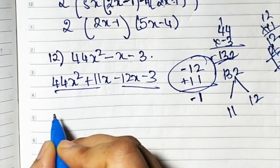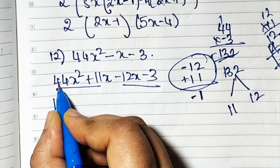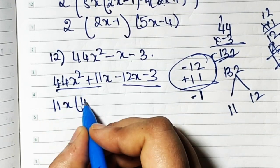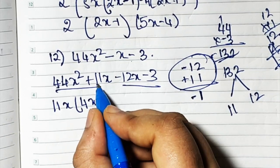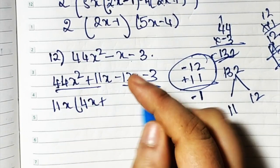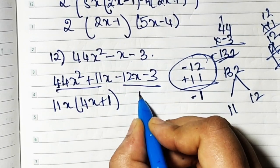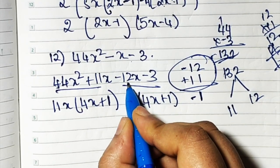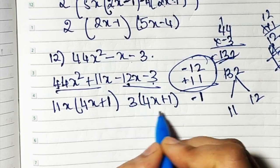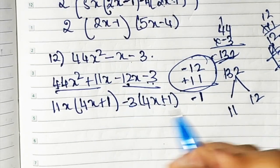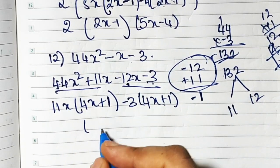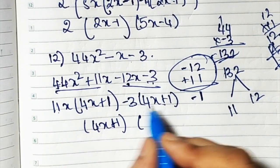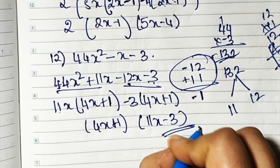Two groups form. What is common? 11 is common because 11 fours are 44. So 11 is common, and x is also common. What remains inside? 4 — because 11 has gone out and x has also gone out, so 1x remains. Here nothing remains because the whole thing has gone out, so put 1. Same bracket — what is common? 3 is common because 4 threes are 12, and here also 3. So I take it out. But here minus and here plus, so I'll take negative sign outside. So one bracket will have 4x plus 1 and the other bracket is going to have 11x minus 3. I hope this is clear.